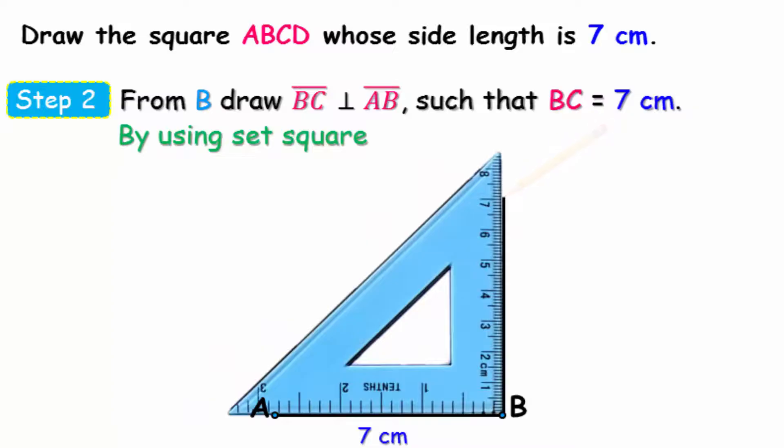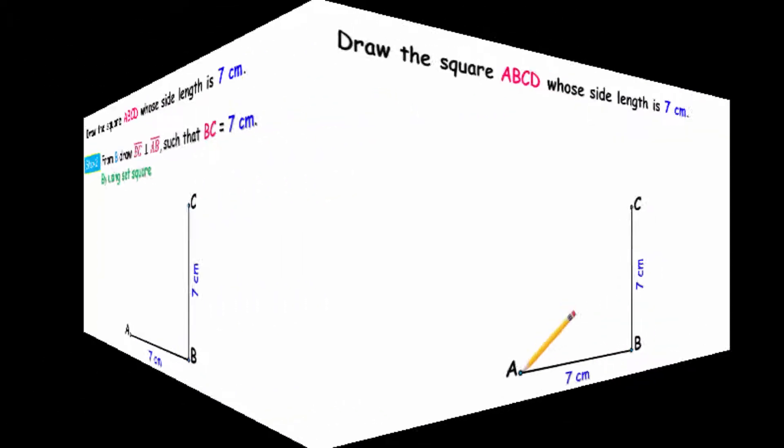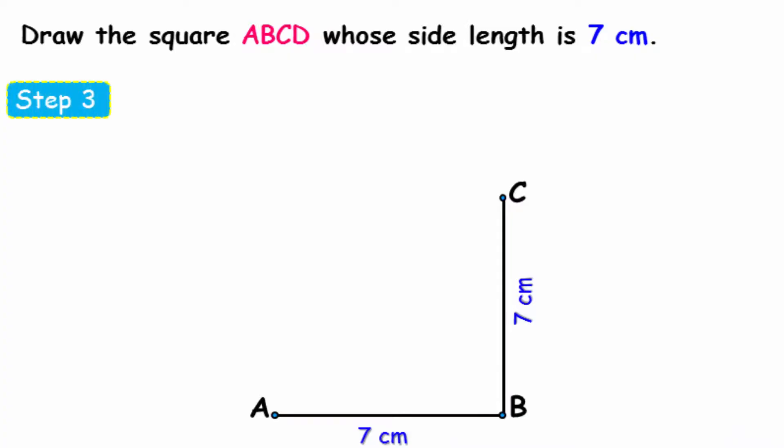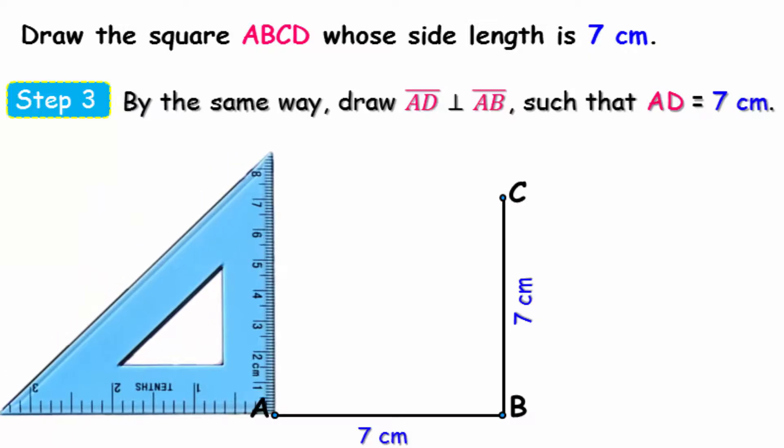Third step, by the same way we will stand at point A and draw a perpendicular line on AB such that the length of AD is also 7 centimeters.